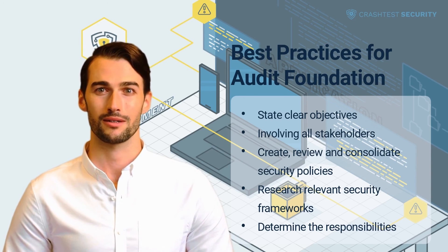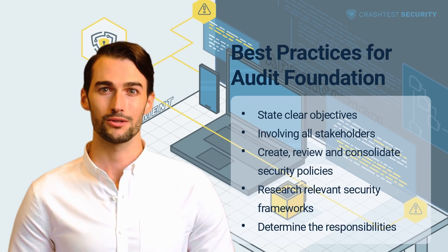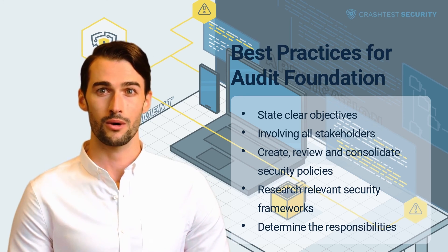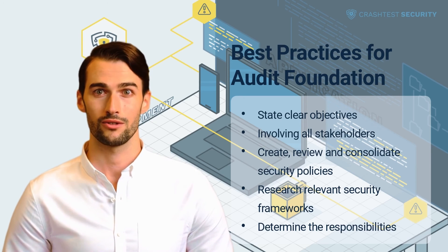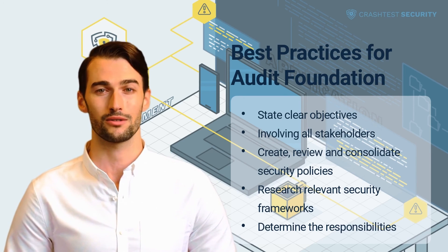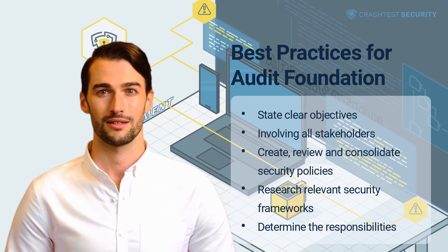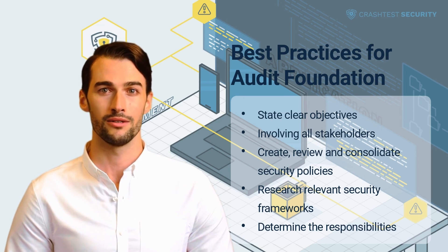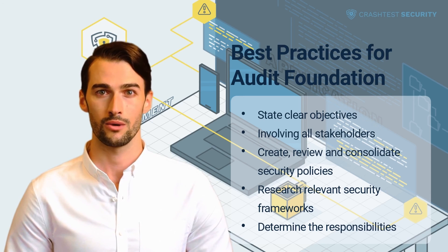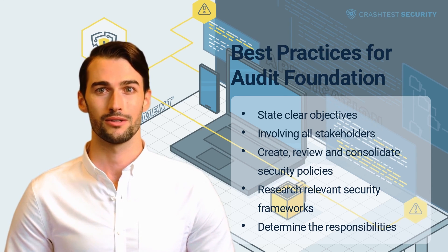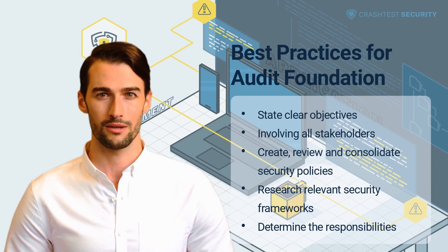Organizations should also determine the responsibilities of security personnel. When auditing the effectiveness of security measures, the auditing team should prepare a questionnaire for cybersecurity staff and other data administrators to understand how well network access control, underlying assets, and information are protected. To make the auditing process flow smoothly, organizations should maintain a list of security personnel and an escalation matrix to be followed in the event of a security incident.